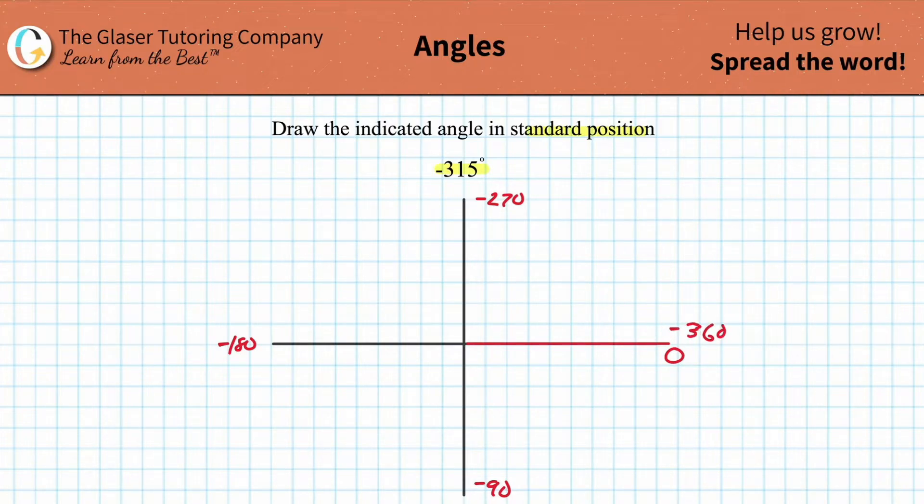If you labeled it the standard way, this would be positive 90, positive 180, positive 270, and positive 360. It doesn't really matter, but I like to view it in a negative fashion because I think it makes it easier to visualize.